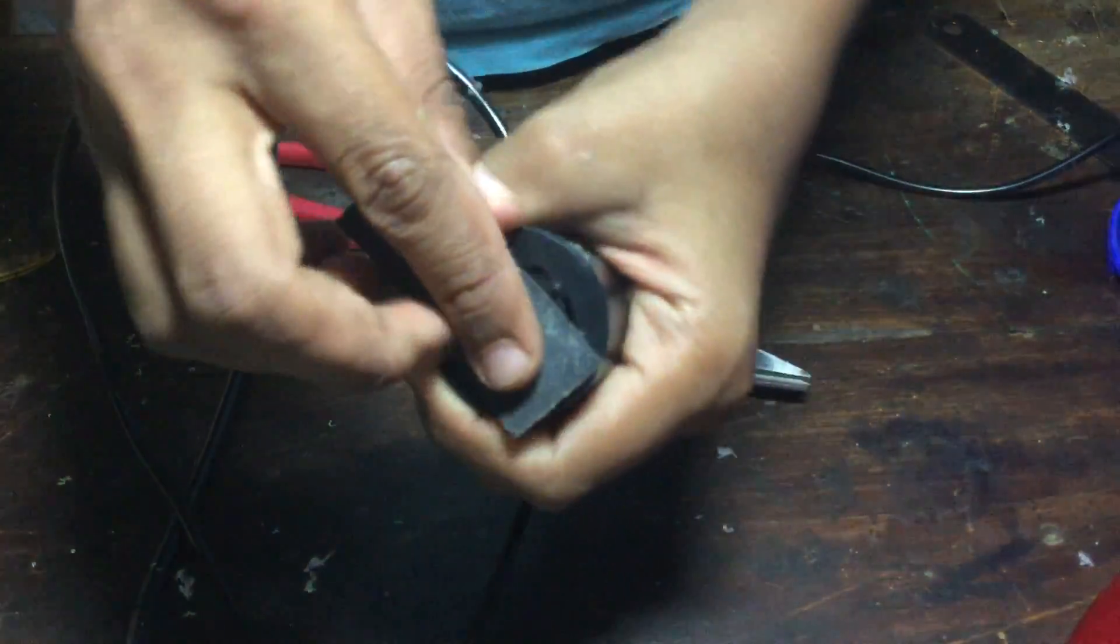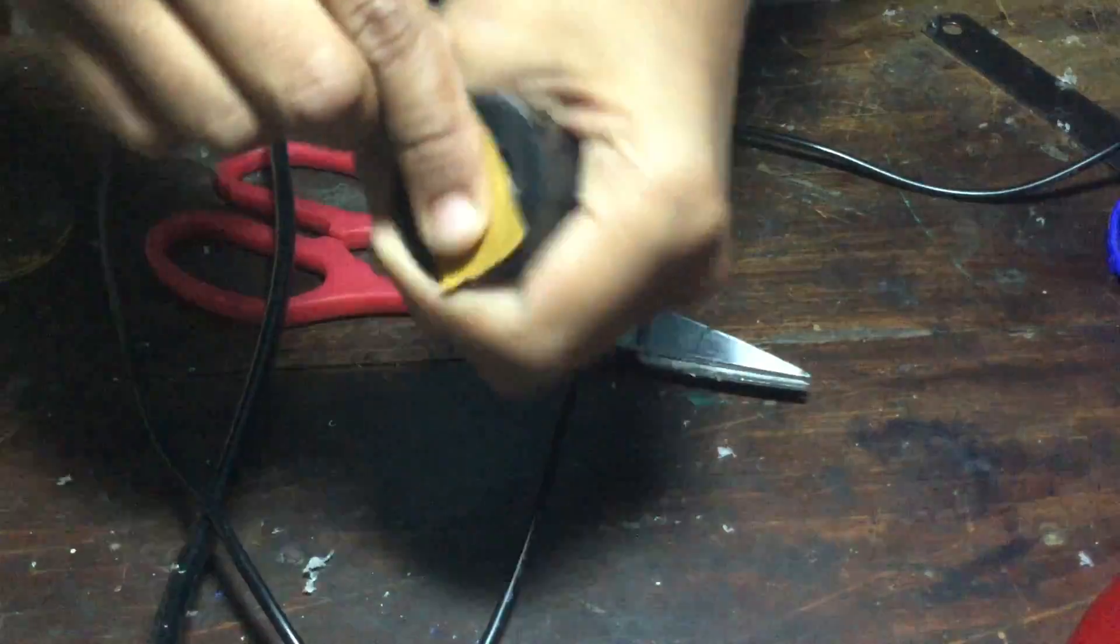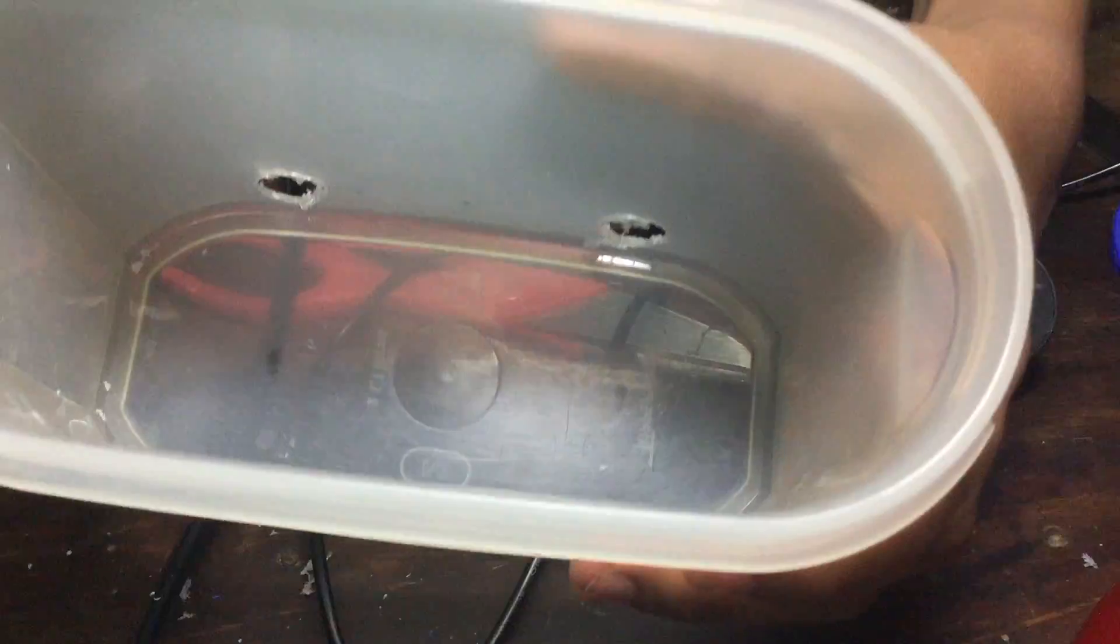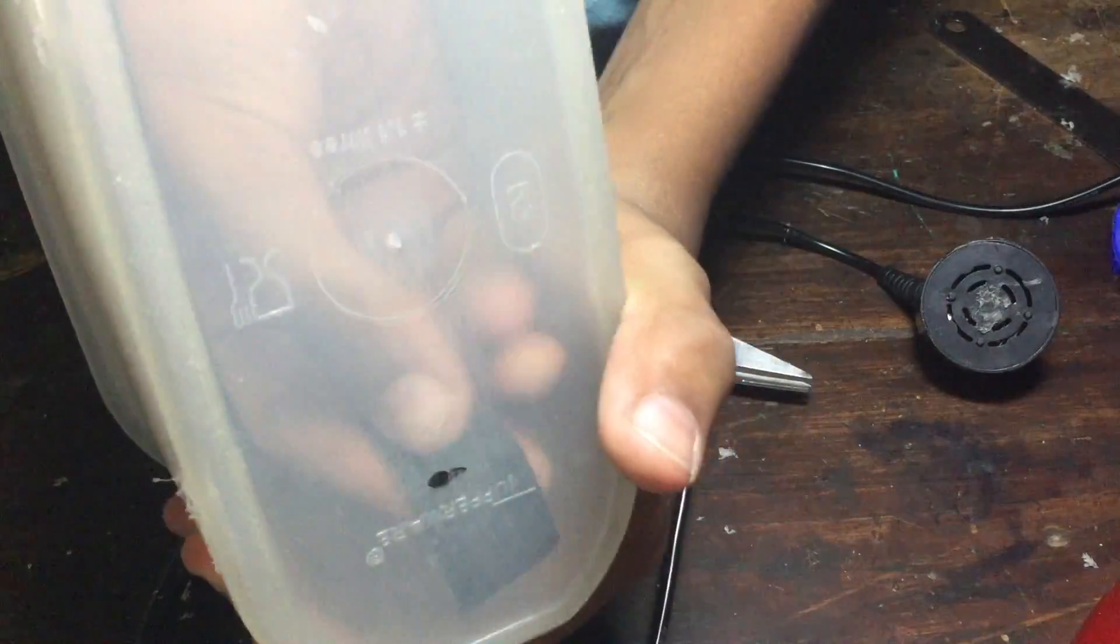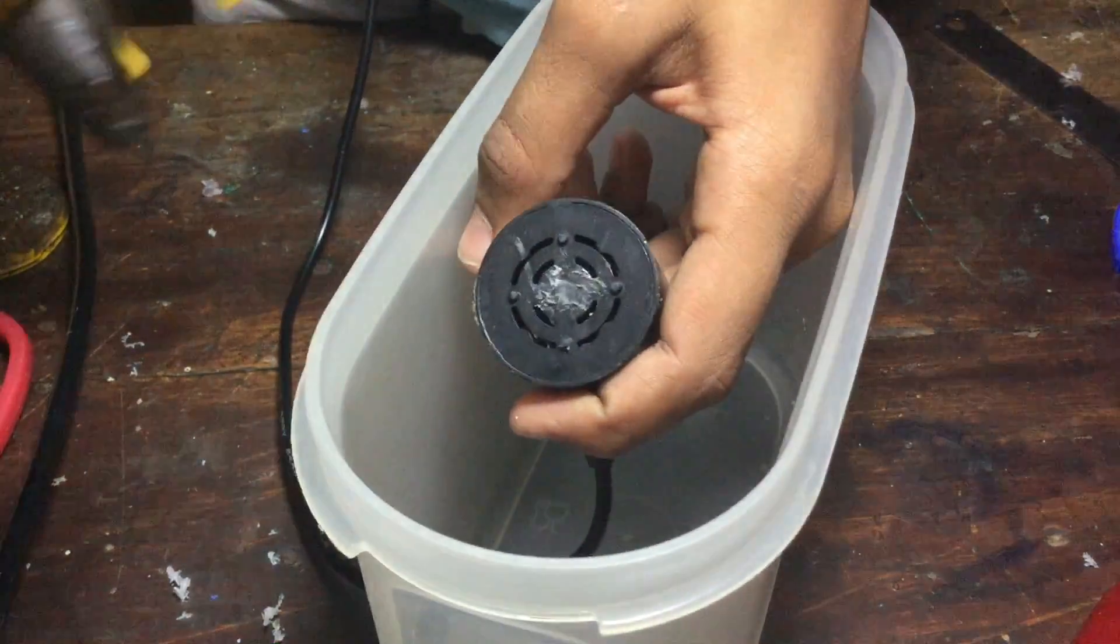Next, rough up the surfaces of both your mister's ultrasonic modules first. And then, rough up the inner surface of your container all using sandpaper. This is so that the hot glue can adhere to them and not actually just come out.